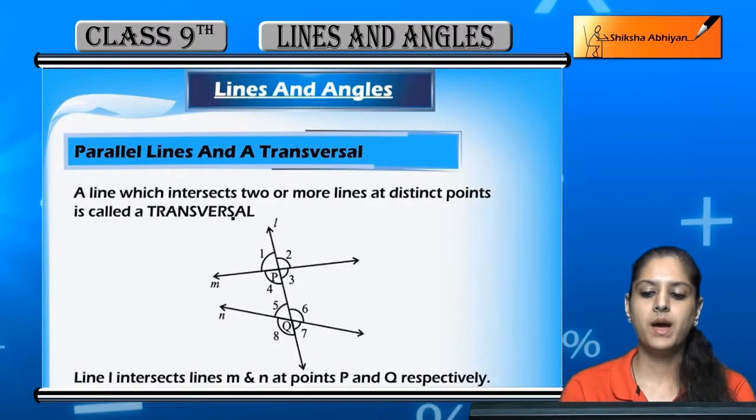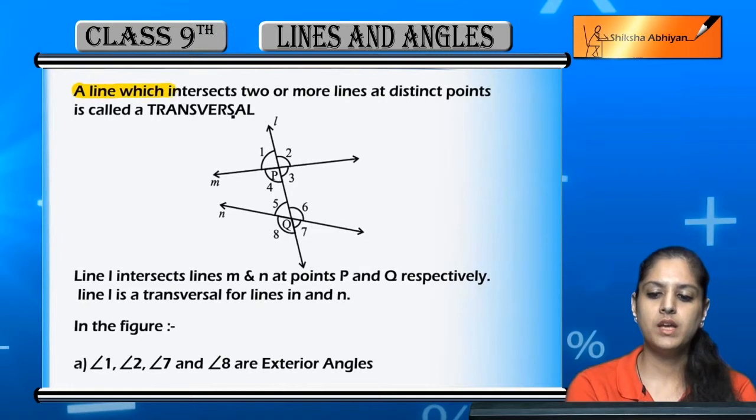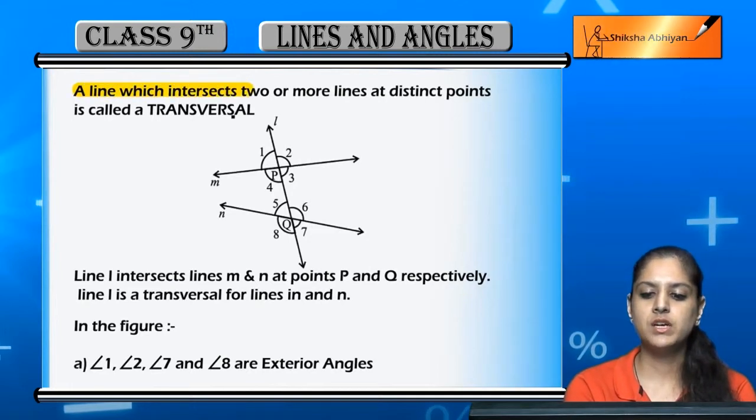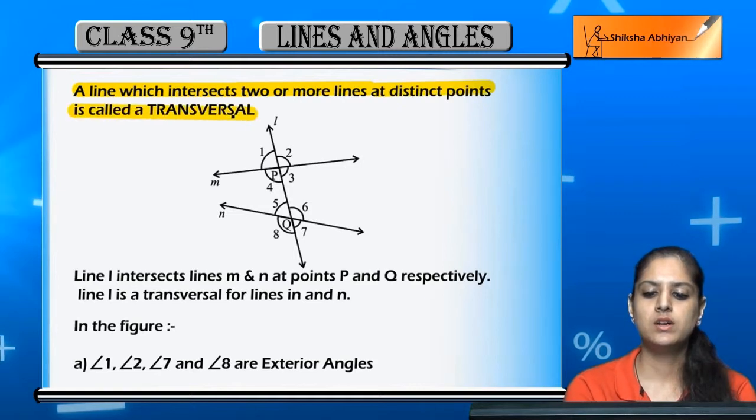Now the next topic is parallel lines and a transversal. A line which intersects two or more lines at distinct points is called a transversal.